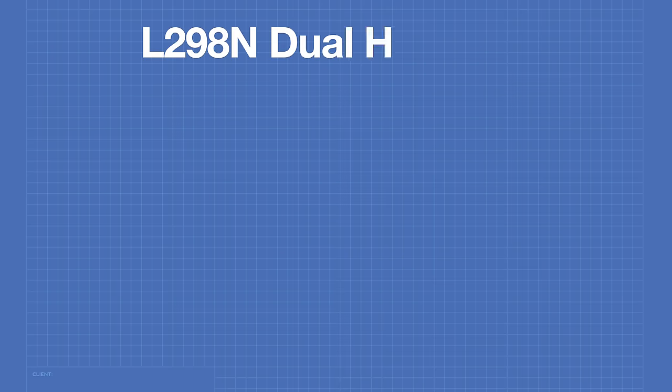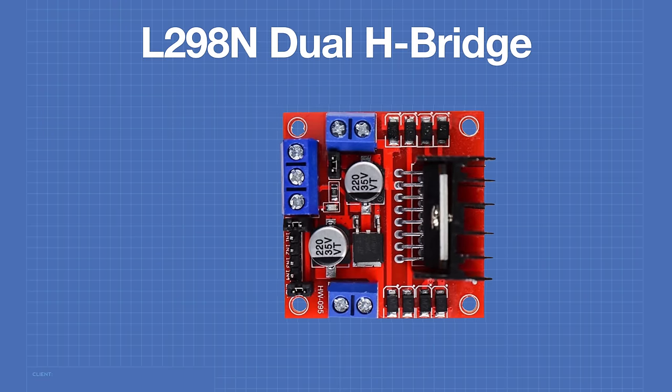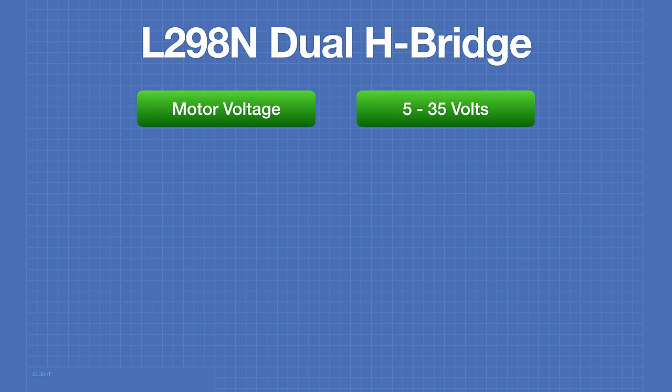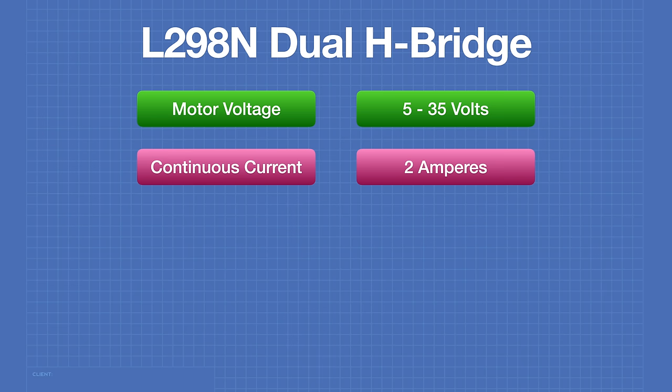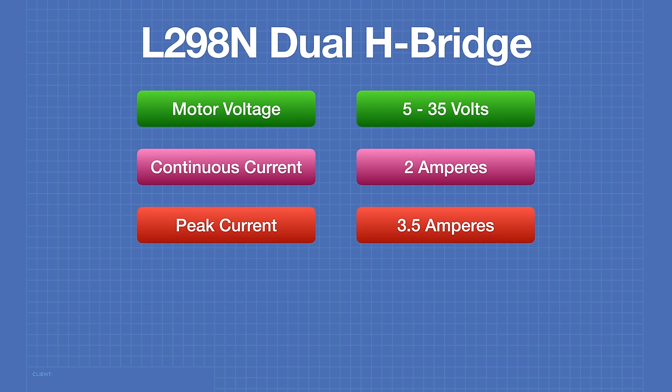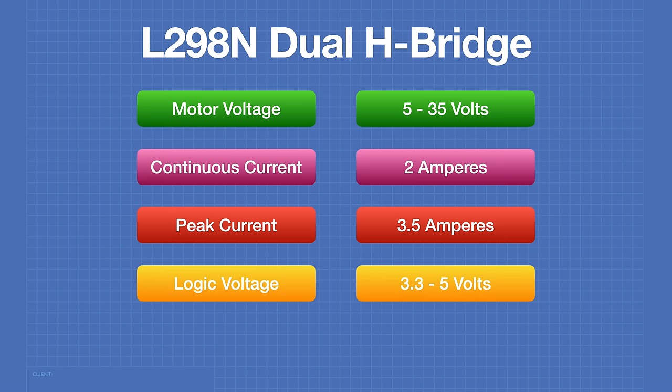The first motor driver we're looking at is the classic L298N, a two-channel H-bridge controller. It's very common, though there are better choices for new designs. The L298N can handle a motor voltage from 5 to 35 volts, supply a continuous current of 2 amperes and a peak current of 3.5 amperes. It accepts a logic voltage from 3.3 to 5 volts and also accepts a 5-volt logic voltage supply, although you can strap it to use the motor voltage supply and eliminate that requirement.